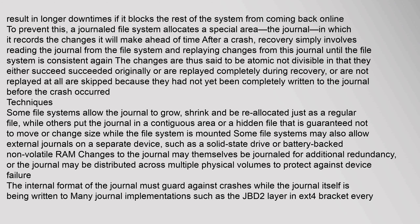If it blocks the rest of the system from coming back online, to prevent this, a journaled file system allocates a special area — the journal — in which it records the changes it will make ahead of time. After a crash, recovery simply involves reading the journal from the file system and replaying changes from this journal until the file system is consistent again. The changes are thus said to be atomic, not divisible, in that they either succeeded originally or are replayed completely during recovery, or are not replayed at all because they had not yet been completely written to the journal before the crash occurred.